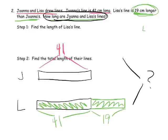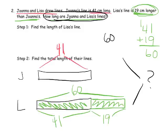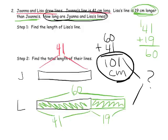So let's do that. 41 plus 19. 9 plus 1 is 10. Carry the 1. And then 1 plus 4 plus 1 is 6. So that's 60. So Lisa's combined length is 60. And now we want to find the total of their two lines. So that means we need to do 60 because that's Lisa's line plus 41. That's Joanna's line. And we add them together. And we get 101 centimeters. 100 plus 1 centimeters. 101 centimeters.